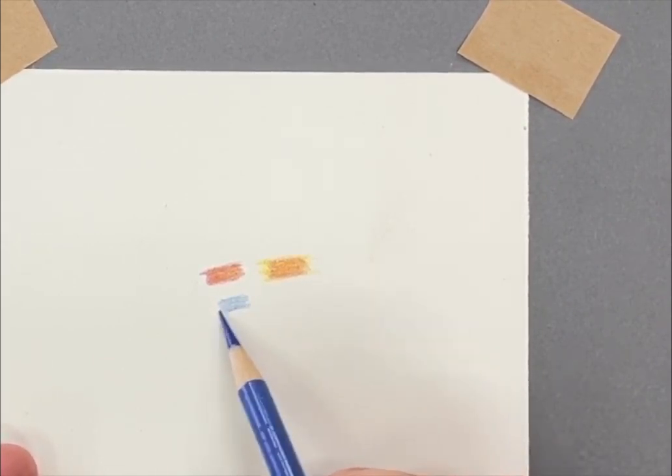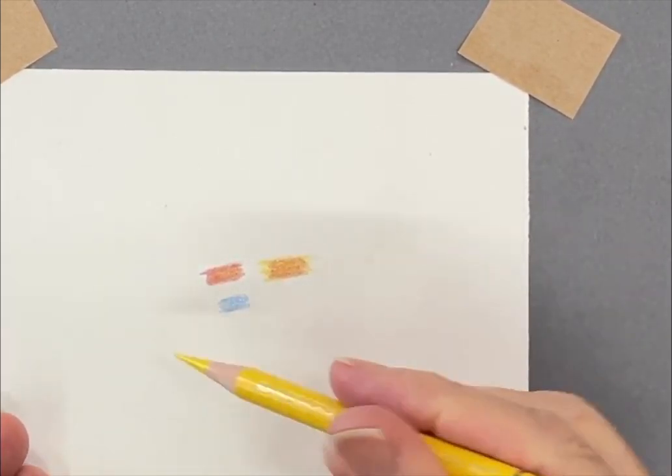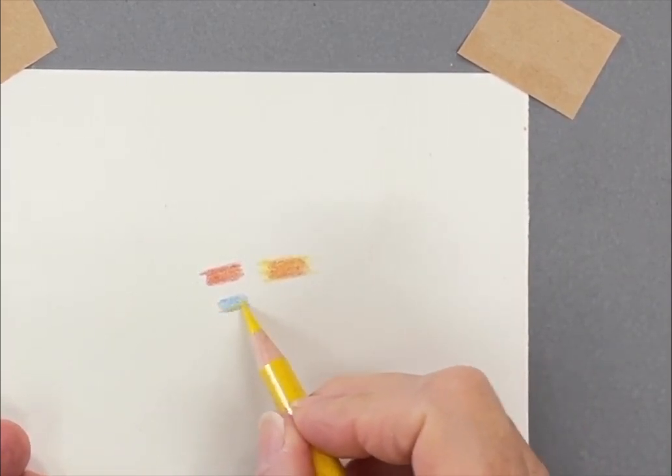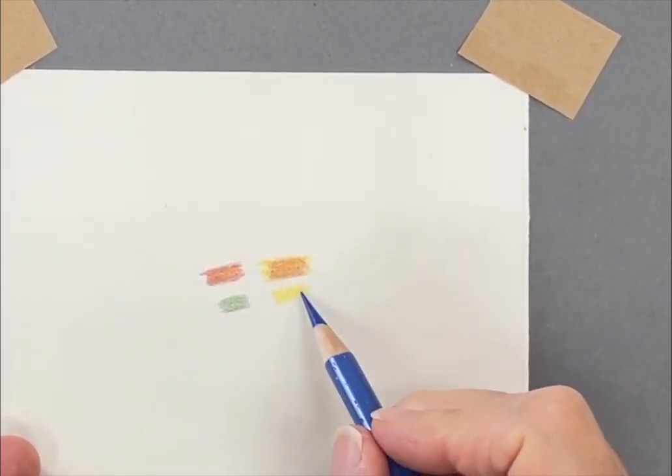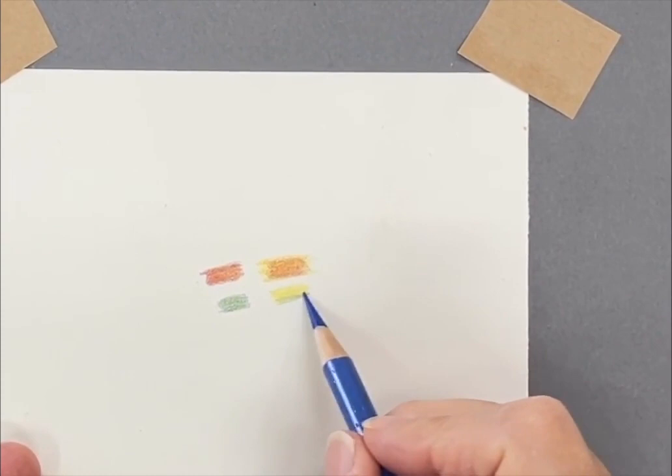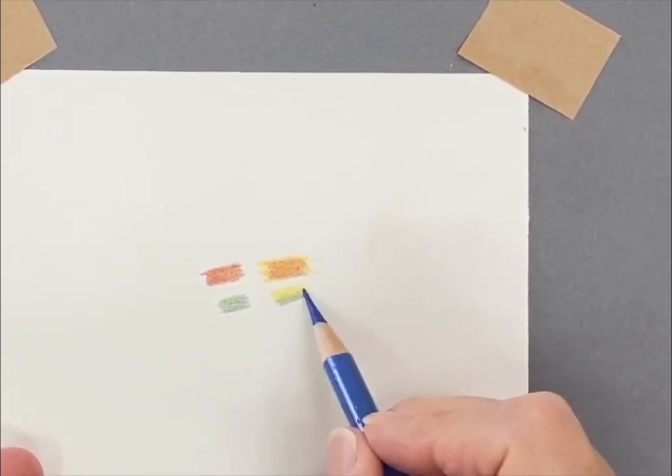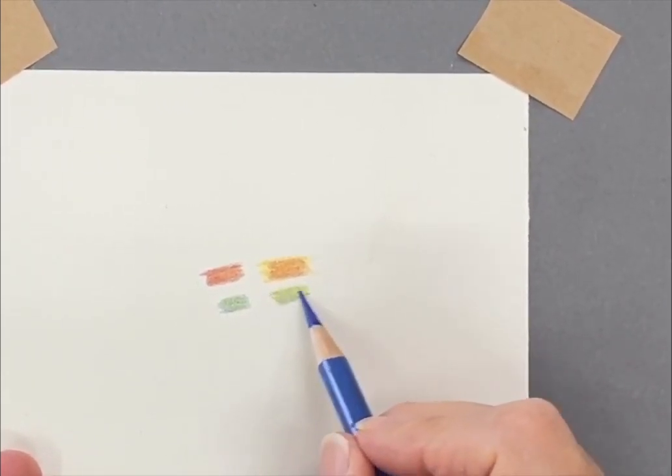With the greens again, you get quite a nice green. This will be a bluey green, and a more yellow green with just light pressure of the blue on top.